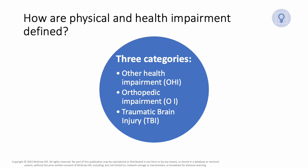Three categories are considered as a health impairment, or the acronym OHI. Impairment results in limited strength, vitality, or alertness concerning the educational environment. Orthopedic impairment, OI, is caused by congenital anomalies such as clubfoot or the absence of some member diseases such as poliomyelitis or bone tuberculosis, and other causes such as cerebral palsy, amputations, and fractures or burns that cause contractures.